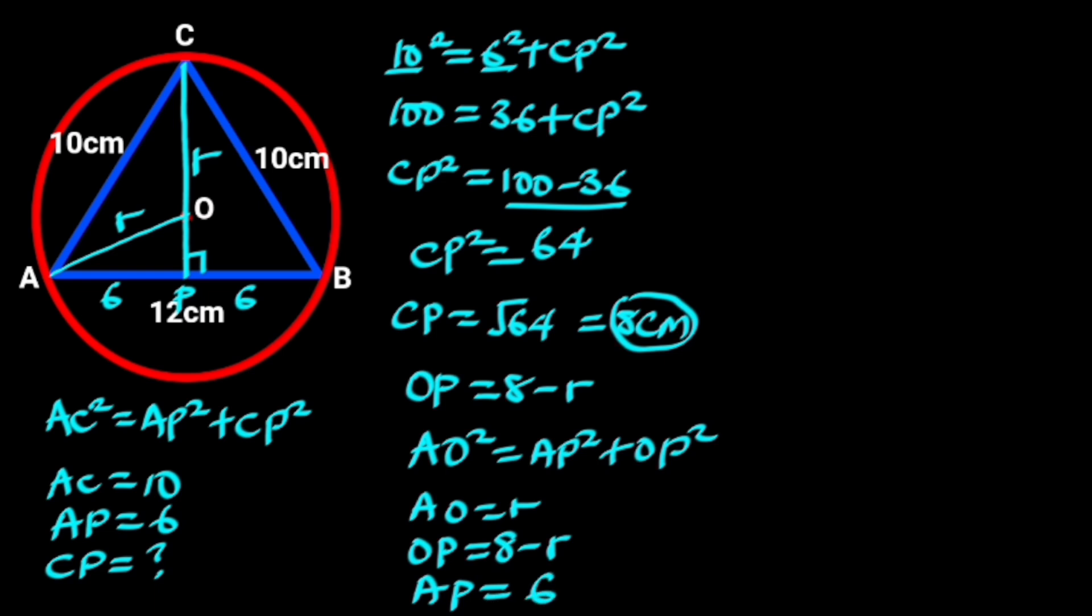Substituting these values in the formula will give us R square equals 6 square plus 8 minus R square. Expanding 8 minus R square will give us 64 minus 16R plus R square.